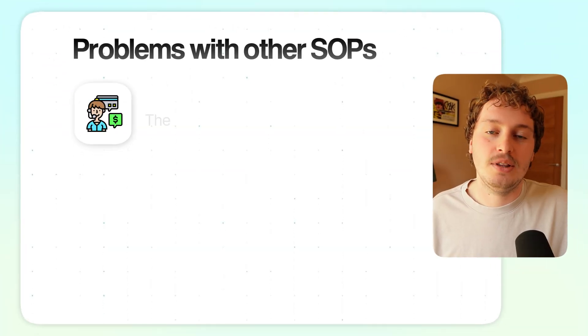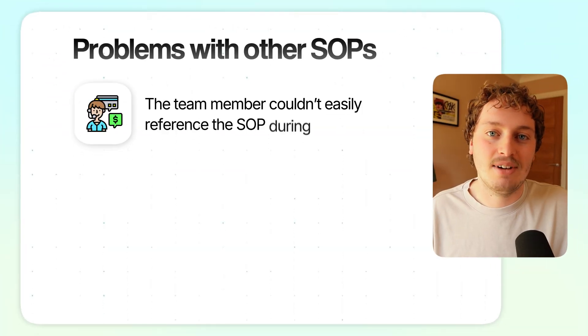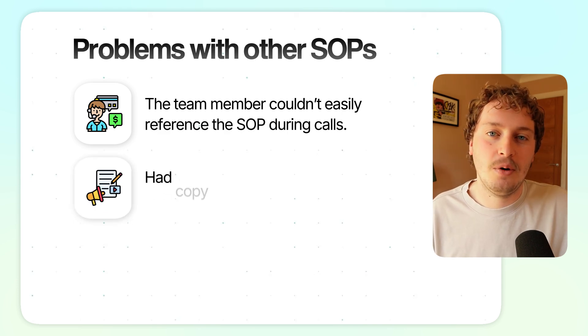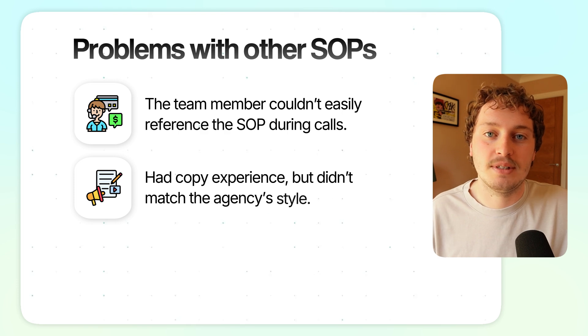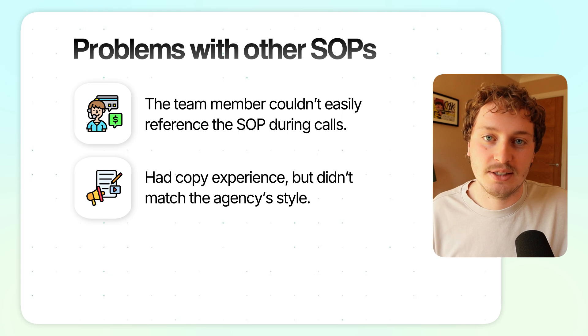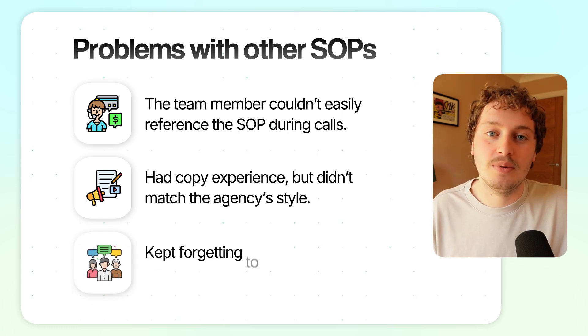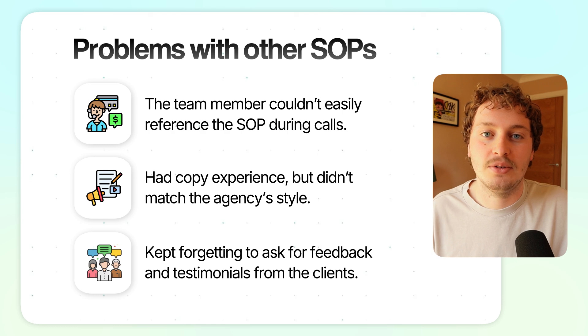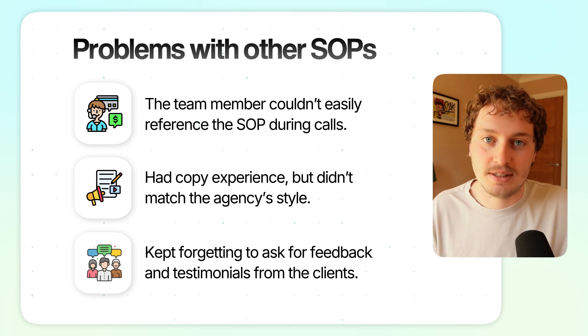I went back to the founder and took a closer look at his processes. I asked him what problems he had actually faced in delegating the other processes that he had created SOPs for. Number one, on the strategy call, the team member wasn't able to easily reference the SOP in the cadence of actually talking to the client. Number two, for writing ad copy, although the team member had experience in writing copy, he wasn't able to easily emulate the style of the agency. And number three, the team member was simply forgetting to ask for feedback and testimonials from clients at the end of their project together.